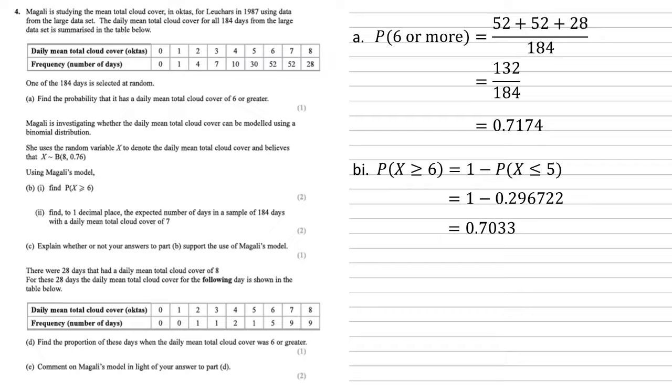For part 2 we need to find to one decimal place the expected number of days in a sample of 184 days with a daily mean total cloud cover of 7. Again we're just going to put this into the calculator to find the probability of X equals 7, which is 0.281188. There are 184 days, so to find the expected number of days we're going to multiply our answer by the 184, which gives us 51.7385, or to one decimal place, 51.7.